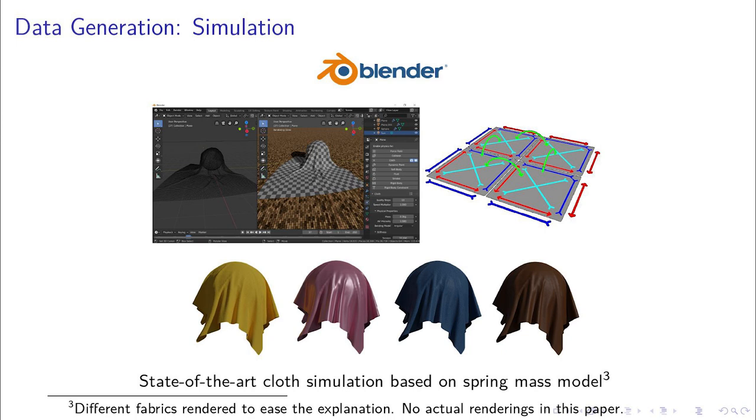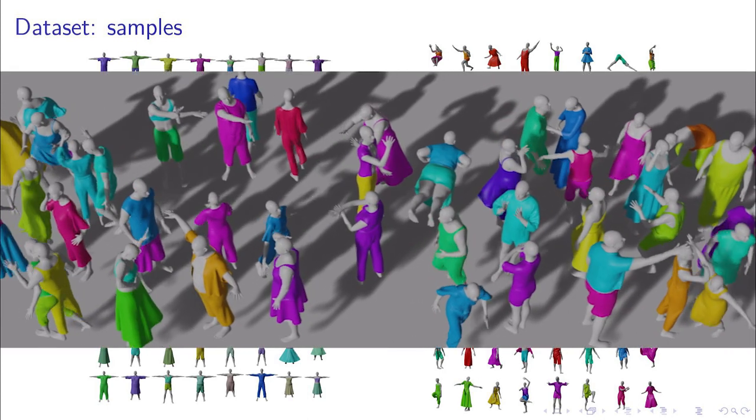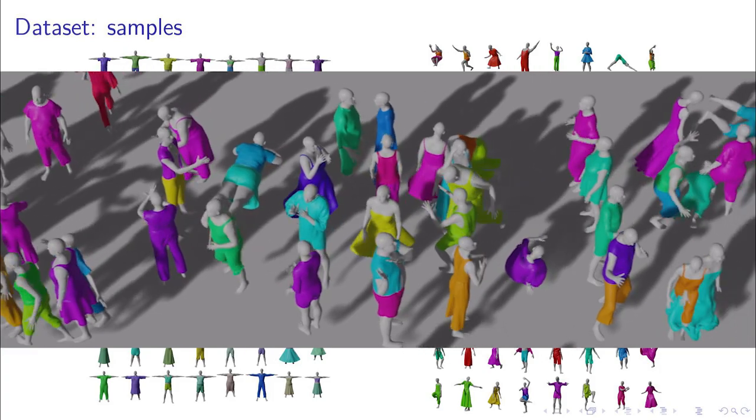cotton, silk, denim and leather. No other dataset contains fabric variability. CLOTH3D is unique in terms of garment types and cloth dynamics.